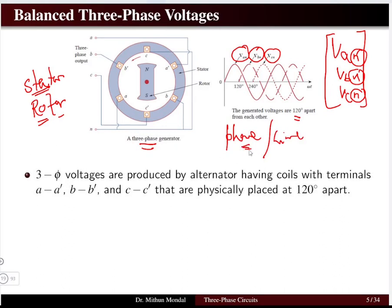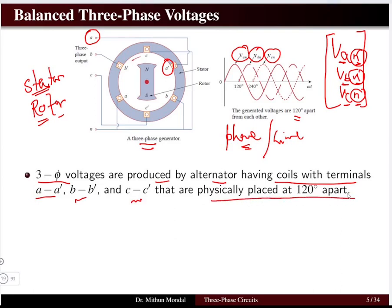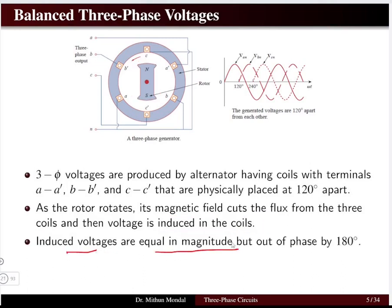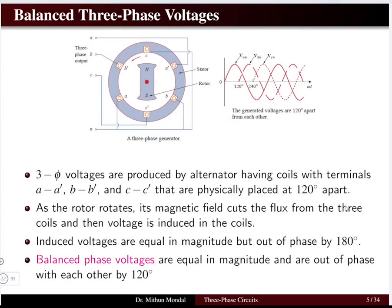Phase quantities refer to the voltage of line a with respect to neutral, line b with respect to neutral, and line c with respect to neutral. The alternator has coils with terminals a-a', b-b', and c-c' physically placed 120 degrees apart in the stator. The rotating rotor cuts the magnetic flux lines from the three coils, inducing voltage — this is the working principle of an alternator. The induced voltages are equal in magnitude.